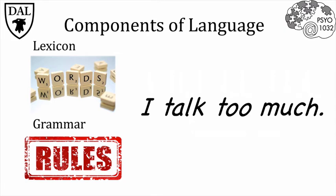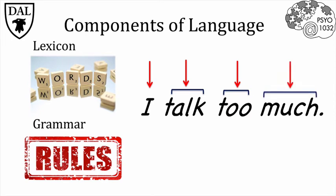This sentence has four units of meaning. I is the subject, talk is the action happening, too conveys excess, and much indicates amount. These are called morphemes, or units of meaning in a language. In this sentence, each word is also a morpheme, but that's not always the case.